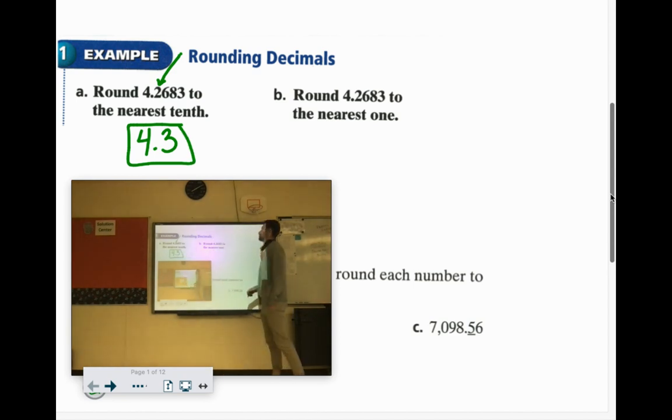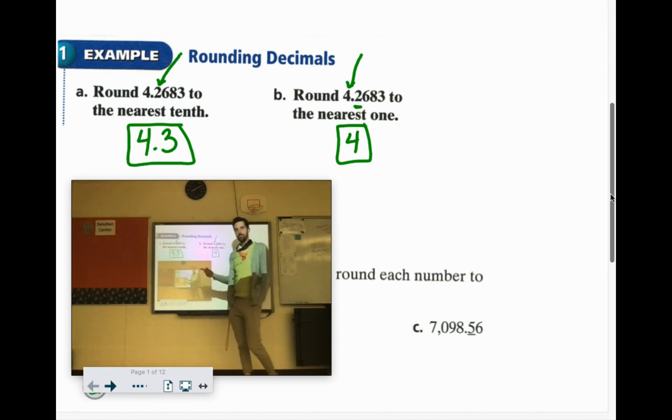Round 4.2683 to the nearest one. Well, the one column is right there with the four. So if you look after the four, it's a two. So we don't bump it up. We'll just keep it 4. And a lot of times they won't say round to the nearest one. They'll say round to the nearest whole number.